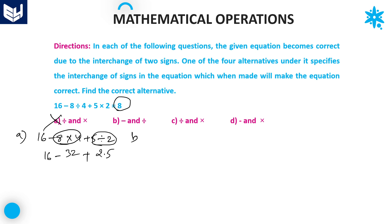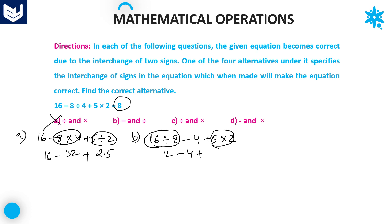Next, option B — interchange minus and division. The equation becomes: 16 ÷ 8 - 4 + 5 × 2. First priority is division: 16 ÷ 8 = 2. Next priority multiplication: 5 × 2 = 10. So: 2 - 4 + 10 = 8. We got the same result as the given equation. Therefore if you interchange minus and divided-by, you will get the correct answer. The required answer is option B.